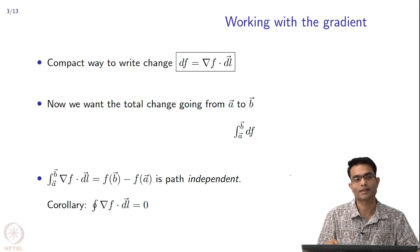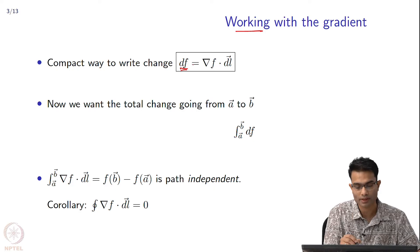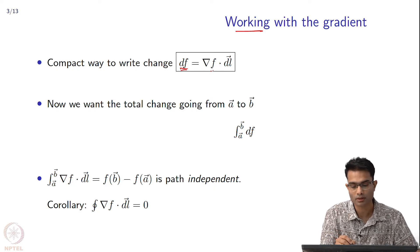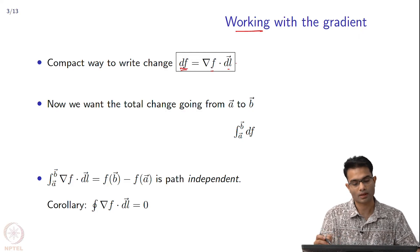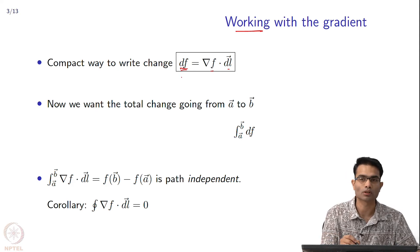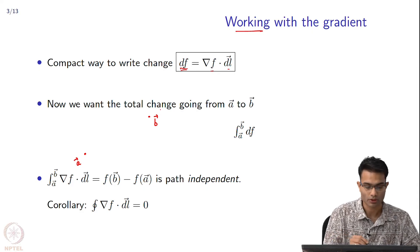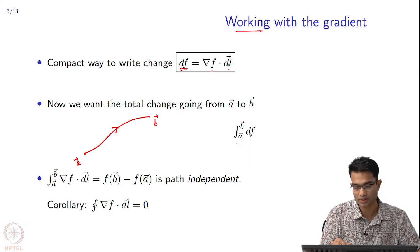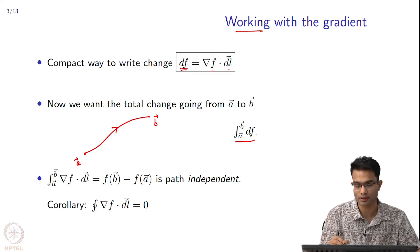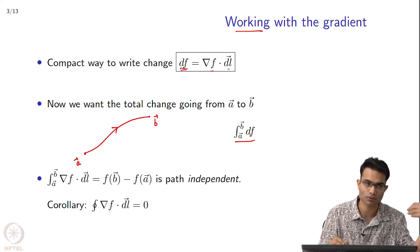Moving on, let us try to work with this gradient that we have defined. From the previous slide we had calculated this total derivative df and wrote it as a dot product between the gradient and the displacement vector. Once you have written a differential element as it is called, the next objective would be to find out what is the total change when I go from some point a vector to some point b vector. For example, I could go like this. This is the integral that I want to calculate. This df could represent a differential or a small amount of work done, and I want to find out the total work done. I have to integrate along the path.